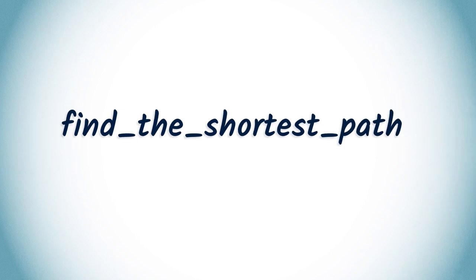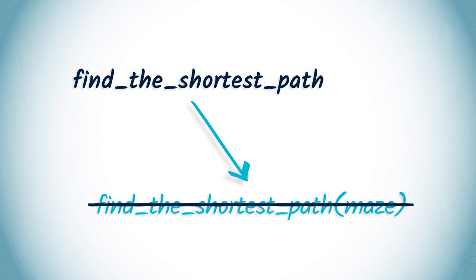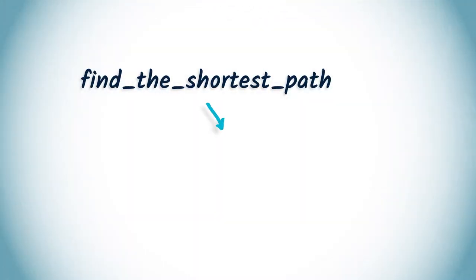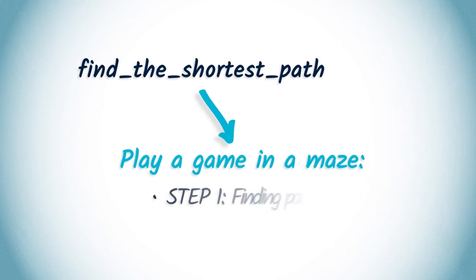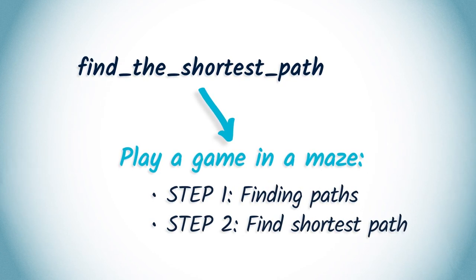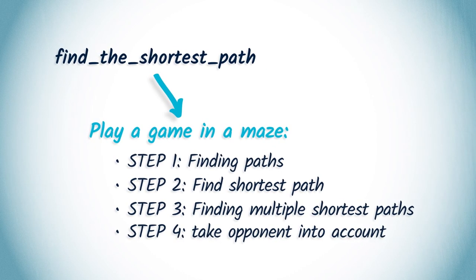Let's take the example of finding the shortest path in a graph. There's no such thing as a function 'find the shortest path' in Python. We're going to code this function so that we can use it to perform more complex tasks. Coding is all about stacking up more and more abstract layers until your program can be written with the help of just a few functions. In this course, we will use graph theory to play a game in a maze. For this, we'll start off by finding paths, then finding the shortest path, then multiple shortest paths, then we'll take the opponent into account. This process is called structuring the code, and the code should always be structured. As a rule of thumb, you should always try to code functions that are no more than 15 lines long. If it contains more than that, then you should probably try to split your function into multiple sub-functions.